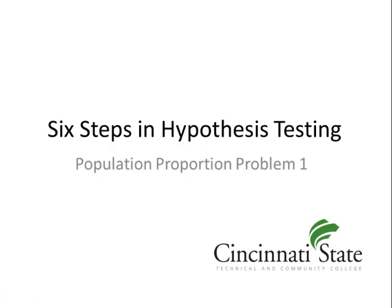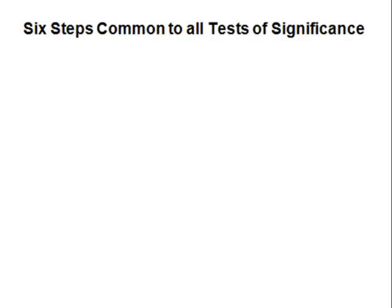Six steps on hypothesis testing. Population proportion, problem one. Six steps common to all tests of significance.